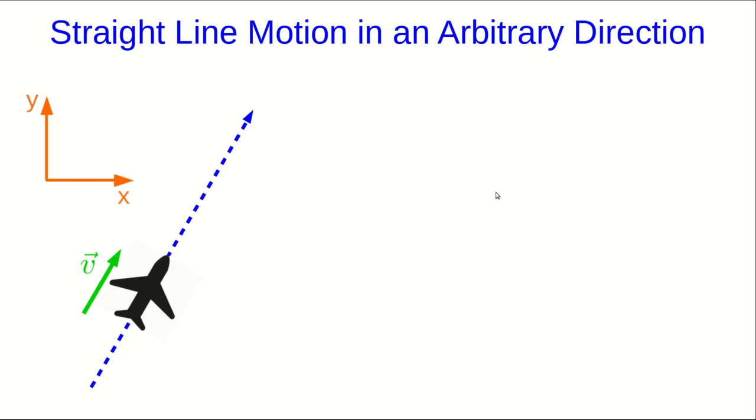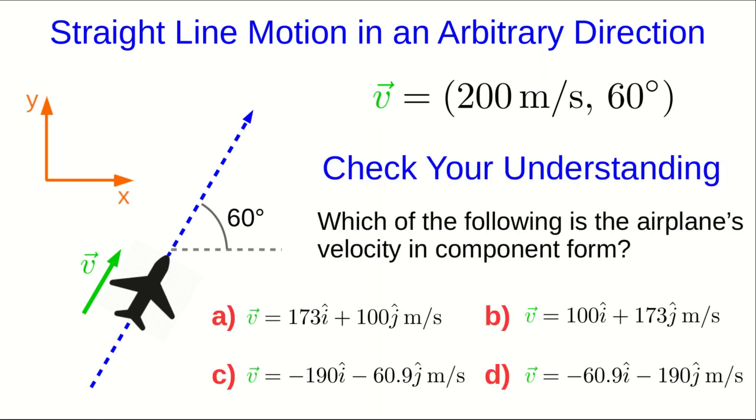So let's look at how to represent a straight line motion in an arbitrary direction. And I'm going to work through a specific example and then generalize it at the end. So suppose we have an airplane, and it's moving in some direction that makes an angle theta with the x-axis. Let me be very specific. Suppose it's moving at 200 meters per second at a 60 degree angle to the x-axis. It's going to be much more convenient to have that velocity in component form. And so I want you to check that you're understanding so far. I want you to change this velocity into component form.